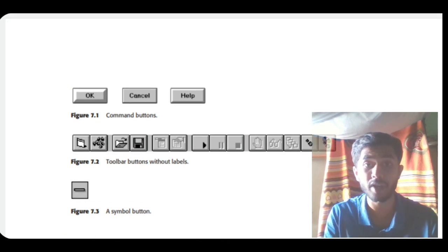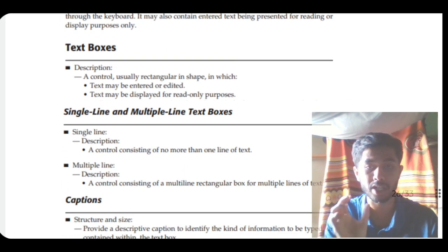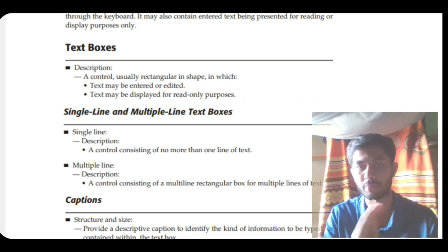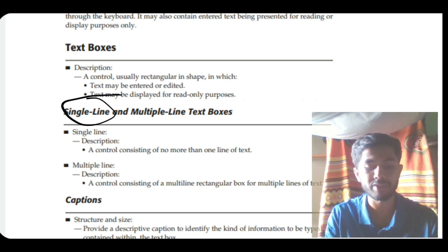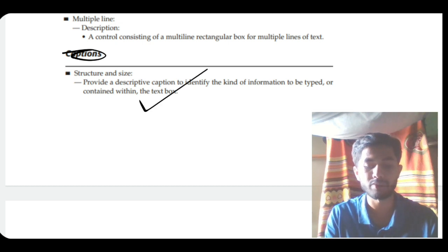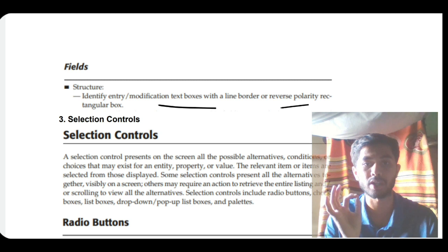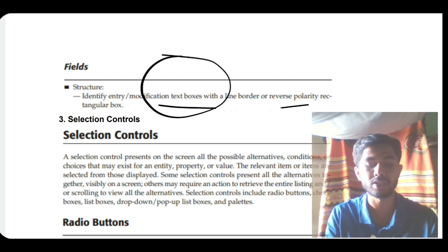We also have text controls, which are of three types. Text boxes contain text that can only be read and cannot be modified — they can be single line or multi-line. Captions indicate descriptive information about whatever action we are going to perform. Fields are modification boxes used for reference purposes where we cannot enter any new information.